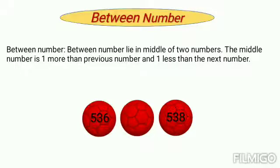Now, let us understand between number. Between number lie in middle of 2 numbers. The middle number is 1 more than the previous number and 1 less than the next number. Let us understand this with the help of an example. Here, you find 3 balls and the number is missing in the middle ball. So, let us find that number. The number which will come here will be more than 536 and 1 less than 538. So, the number will be 537.